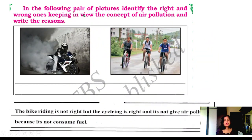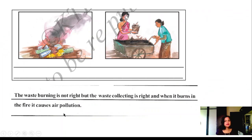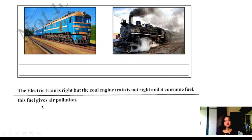In the following pairs of pictures, identify right and wrong ones in view of air pollution. Motorbike riding is not right, but cycling is right because it does not cause air pollution. Burning waste is not right, but waste collection is right — the garbage collector taking waste from the house is the right thing. The electric train is right, while the coal engine train is not right because it consumes fuel and causes air pollution.